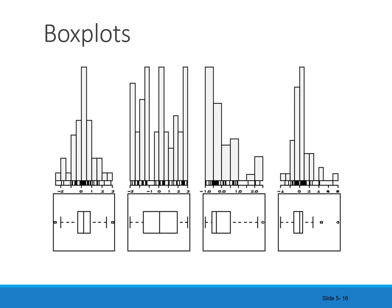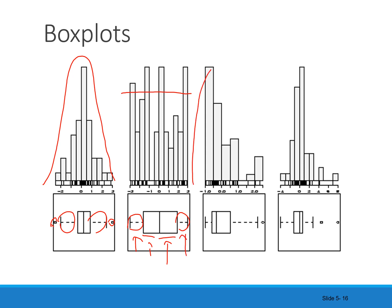Here we see some box plots with their matching histograms so we can see how the shapes correspond. A unimodal and symmetric shape shows whiskers of equal length. A roughly uniform distribution has each section about one quarter of the length. A right-skewed distribution has a much longer right whisker. A symmetric distribution with outliers shows approximately equal whiskers with asterisks at the ends.